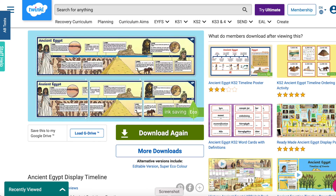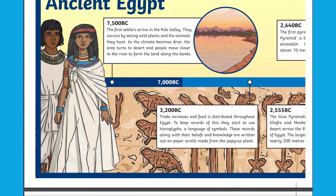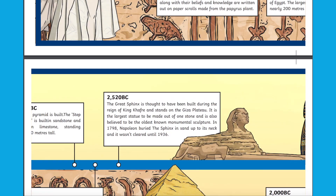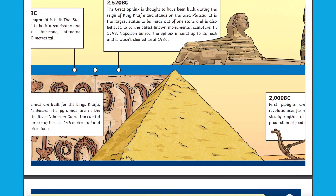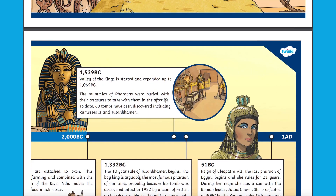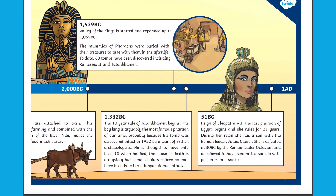Our Ancient Egypt display timeline is a fantastic display for your classroom or even for home. The timeline chronologically goes through the history of Ancient Egypt from 7500 BC, when the first settlers arrived at the Nile Valley, all the way to 30 BC when Cleopatra VII is defeated by Roman leader Octavian.